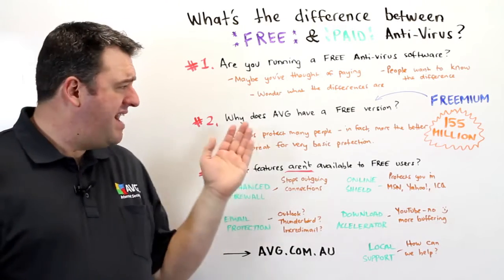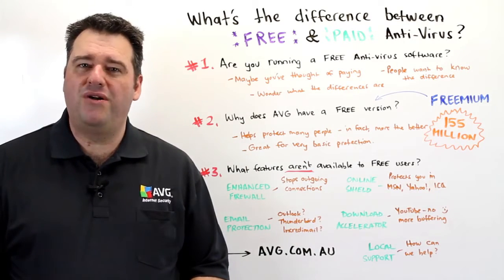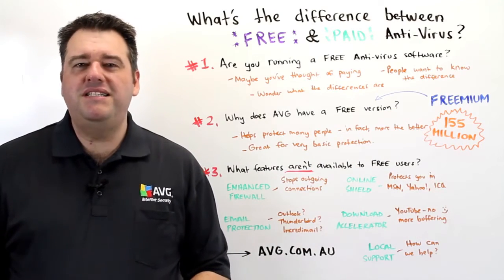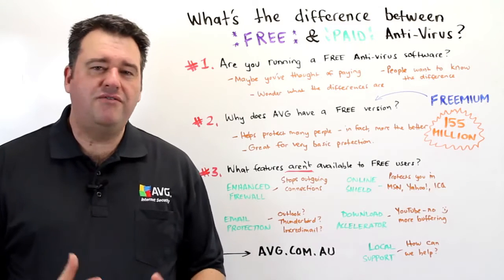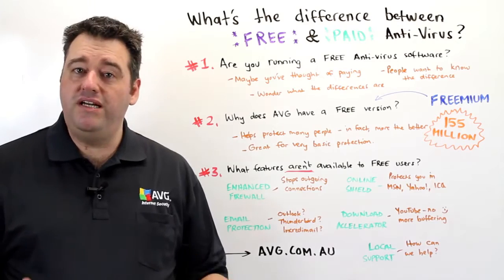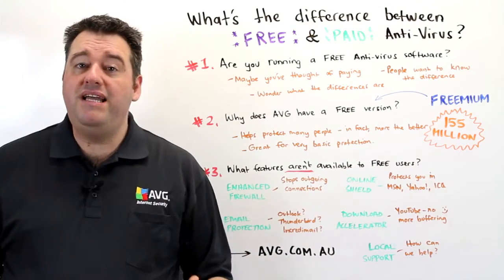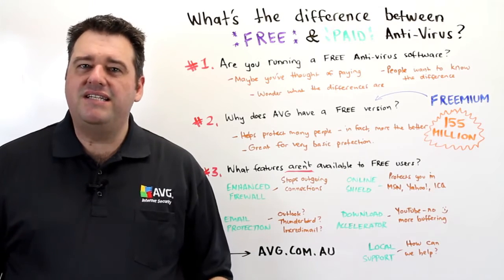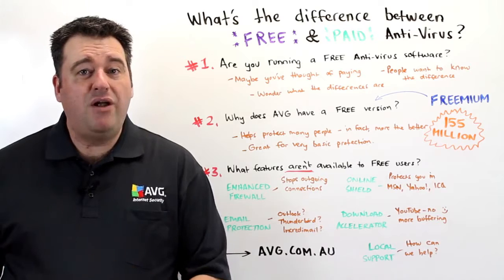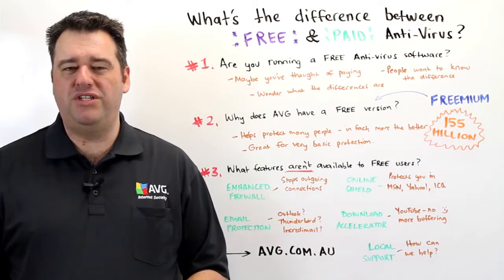But first, why does AVG have a free version? Well, it's because AVG's business model is based on the concept of freemium. Freemium means that a lot of our users use our product for absolutely free, and the rest of our users pay for the product, which actually supports the entire operation. Now with over a hundred and fifty five million active users, this gives us an amazing community which is able to report incidents of malware globally to a central location, and this gives us all a much better level of protection.